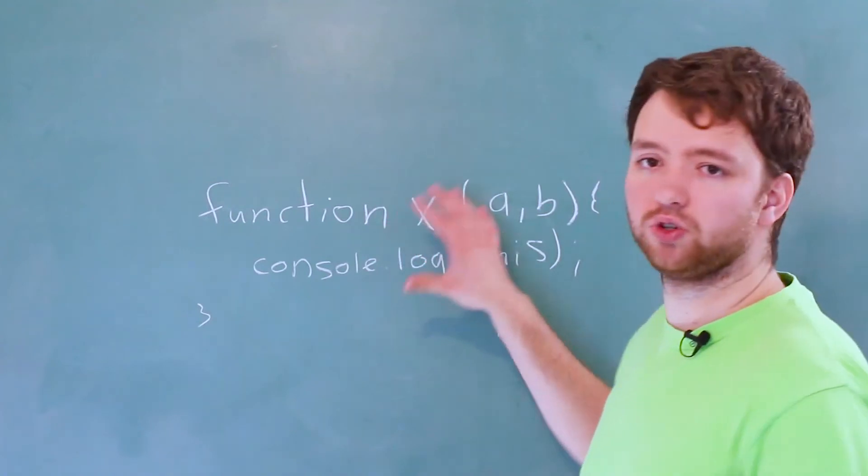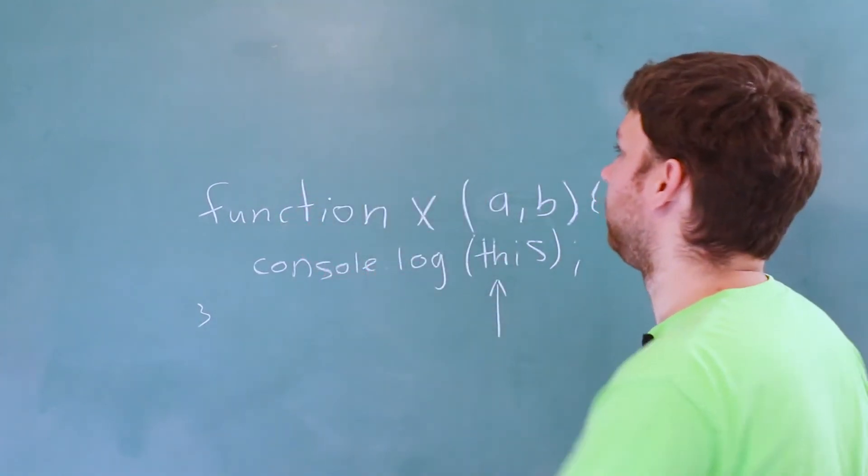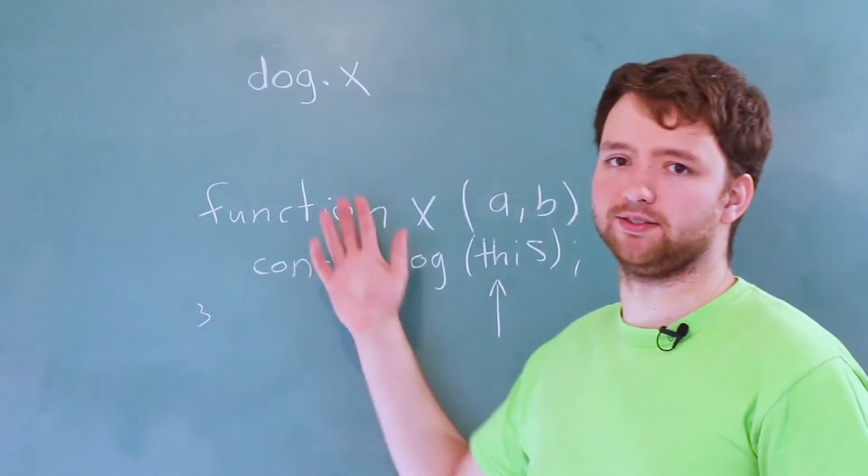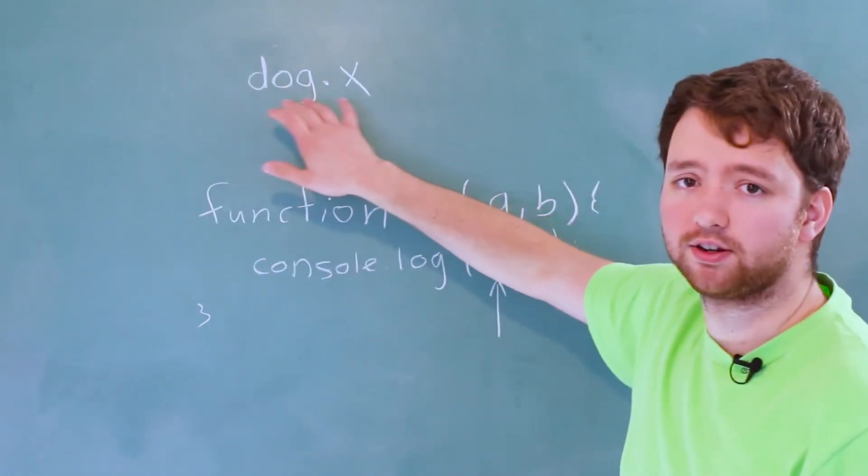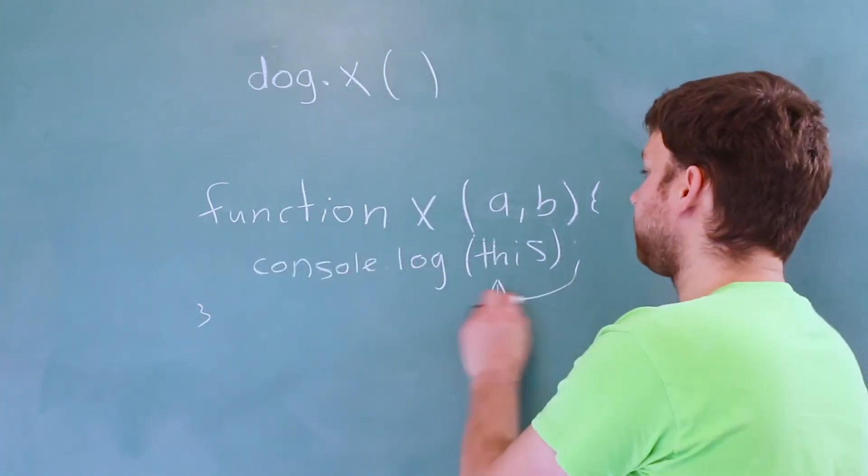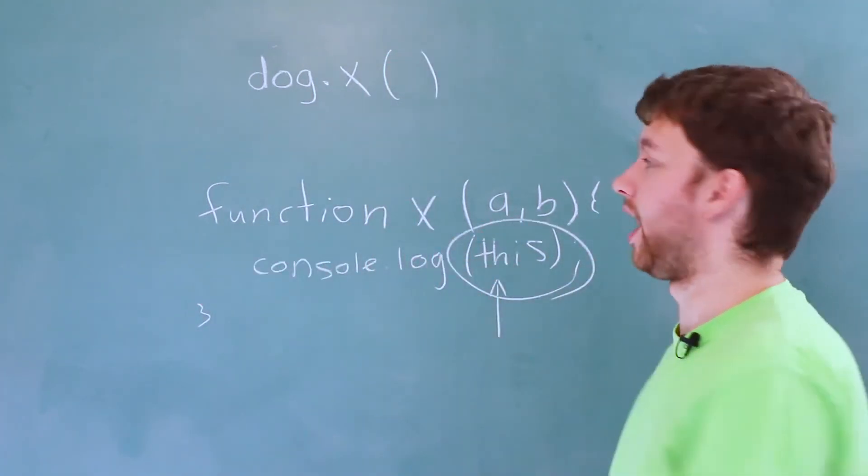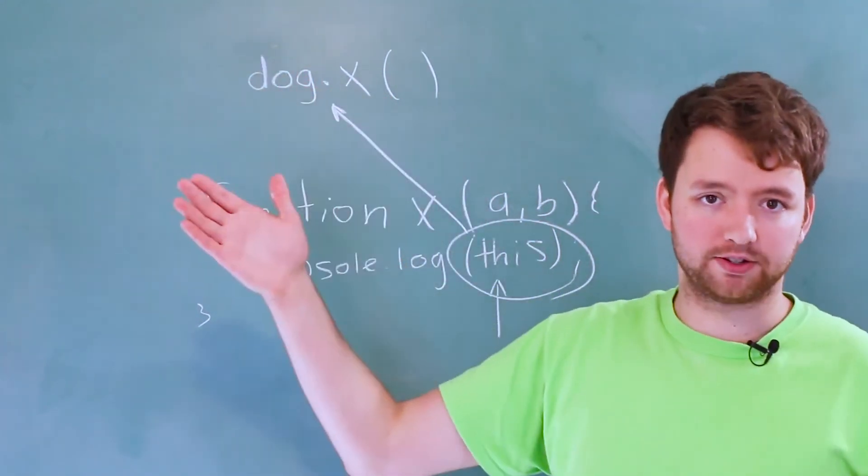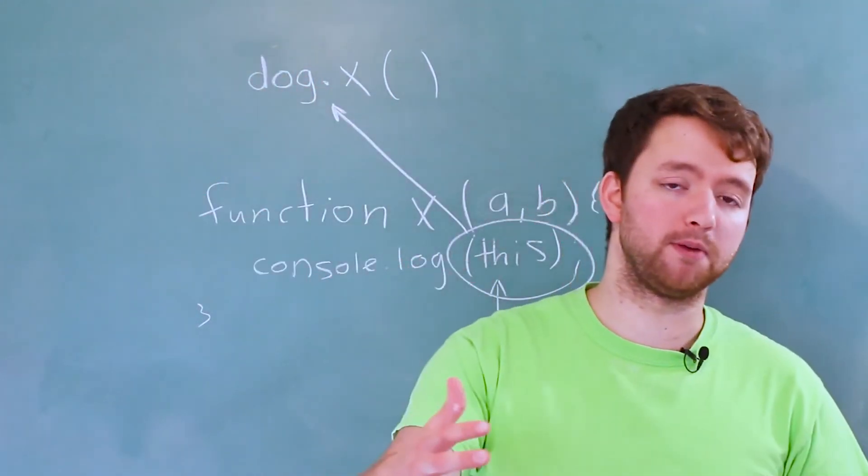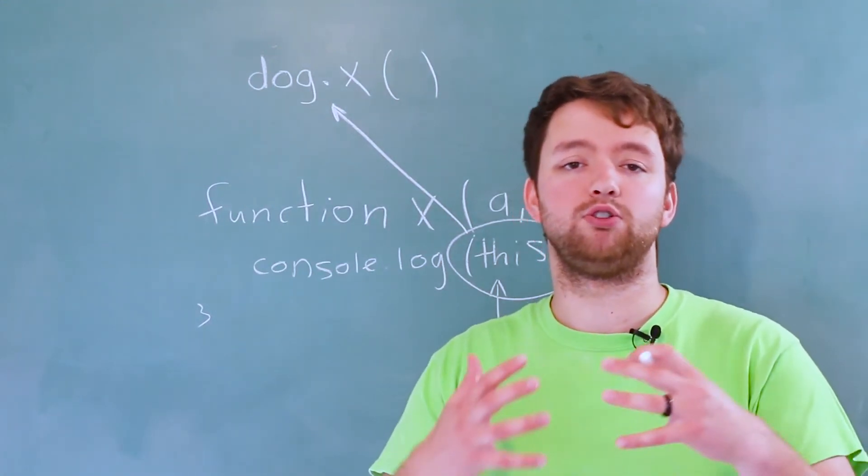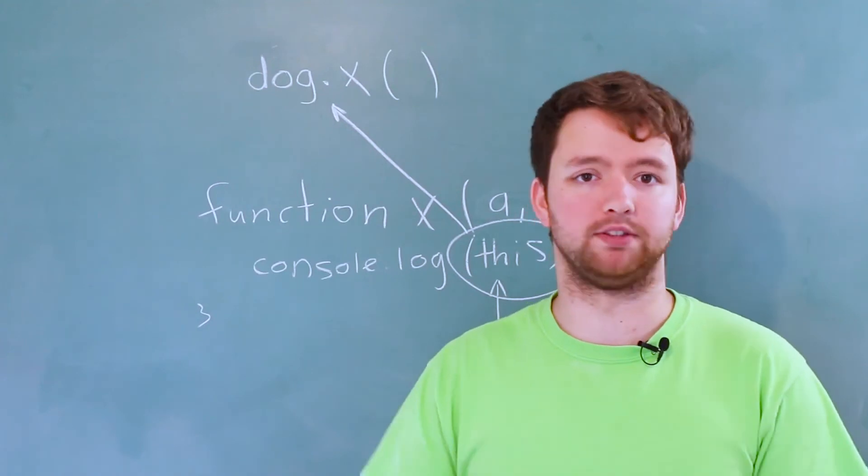So imagine this function was attached to an object. Then it might look something like this. And these names are like terrible because we just have totally random names. But we'd have dog.x. Just as an example, well now this is going to refer to that object. So it would literally output the object that it's attached to. That's coherent with other programming languages as well. C sharp, Java. This is always used to refer to the objects that methods are being called on.